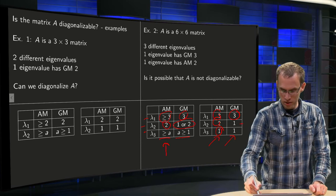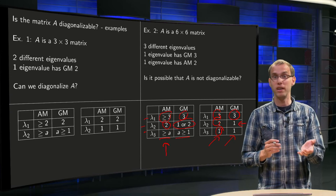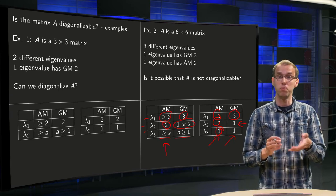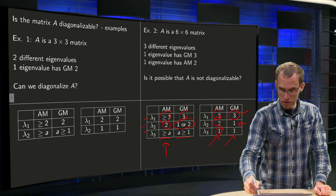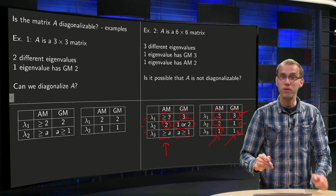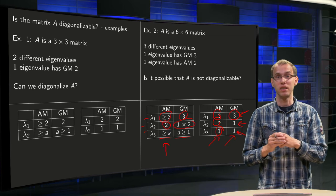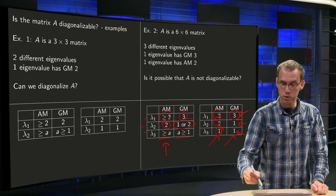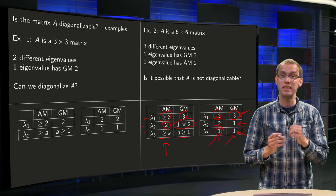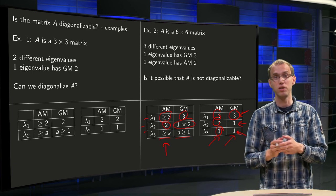Now what about the last element — the geometric multiplicity of lambda 2? Can we choose it such that the matrix is not diagonalizable? We already have enough eigenvalues: 3 plus 2 plus 1 equals 6. For eigenvectors, we have 3 plus 1 equals 4 so far, but the geometric multiplicity of lambda 2 can be either 1 or 2. If the geometric multiplicity of lambda 2 equals 1, then the matrix is not diagonalizable — so yes, it is possible that A is not diagonalizable, if the geometric multiplicity of lambda 2 equals 1 and not 2.